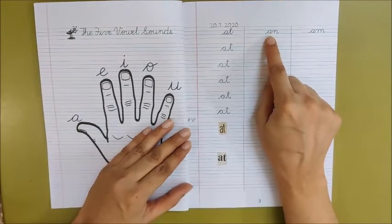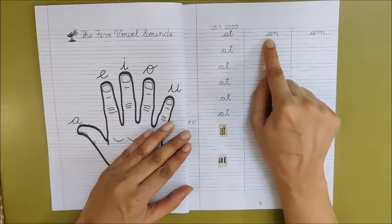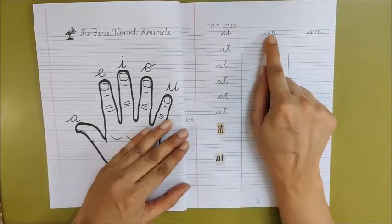Children, keep your pointer finger below a and read this word. A, na, an.